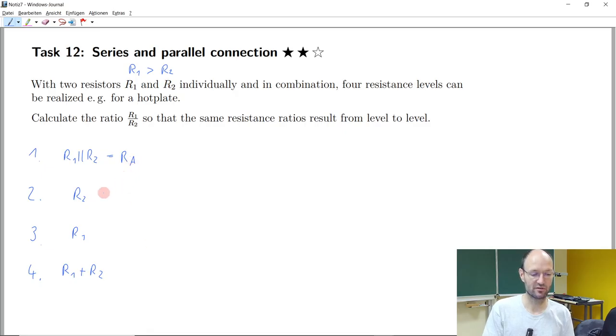So if we call this RA and RB and RC for the different levels. So now, same resistance ratio means we have the same ratio, let's say between D and C,